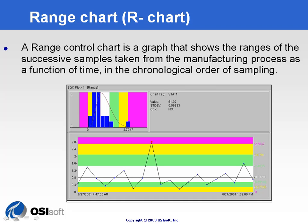The range chart, also called the R chart, is designed to use fixed sampling. Given a sample of observations, we calculate the range, which is the minimum value minus the maximum value, and plot it on the control chart. This is the first time we see something different.